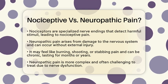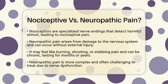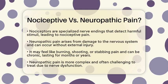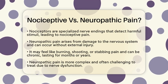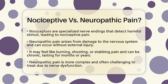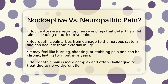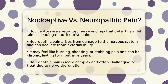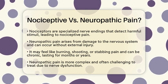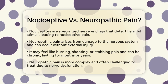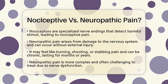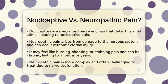Unlike nociceptive pain, neuropathic pain can occur without any external injury. It often feels like burning, shooting, or stabbing pain and can be chronic, lasting four months or even years. Neuropathic pain is more complex and can be challenging to treat because it involves the malfunctioning of the nervous system.